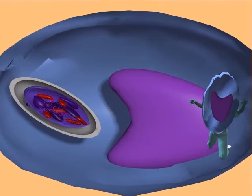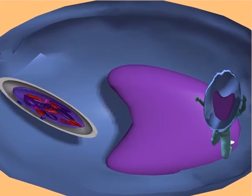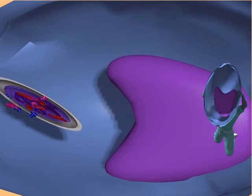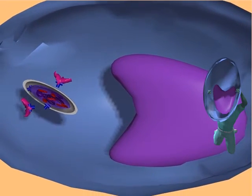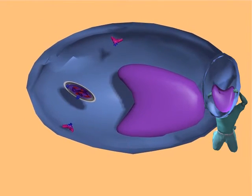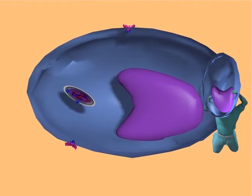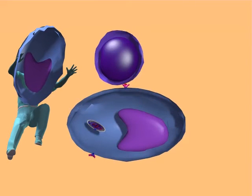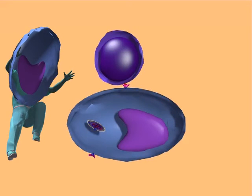I use my special MHC proteins to wear parts of the cells which I have destroyed. This can alert other cells, such as T helper cells, of any impending dangers. I call this action presenting, and I am an antigen presenting cell.